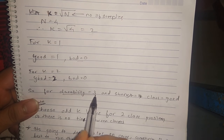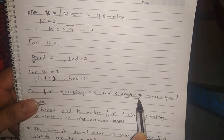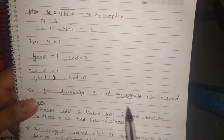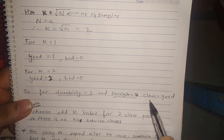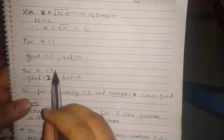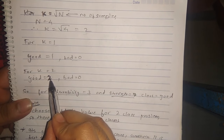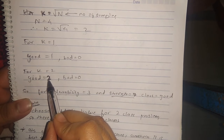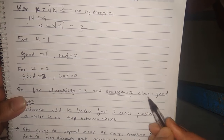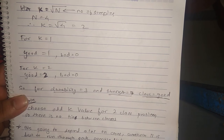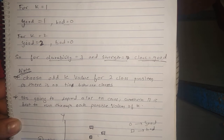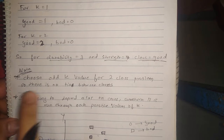For durability 3 and strength 7 — which was our question — the count of 'good' is greater than 'bad', so the class is 'good' for this tissue paper.